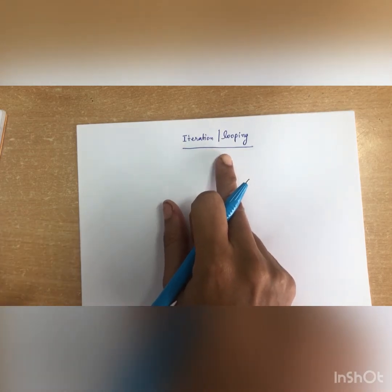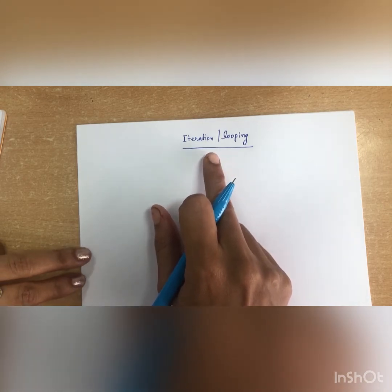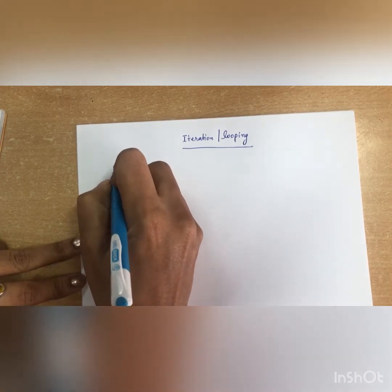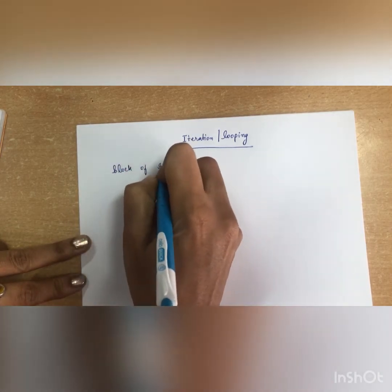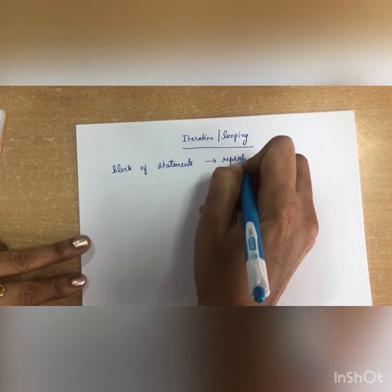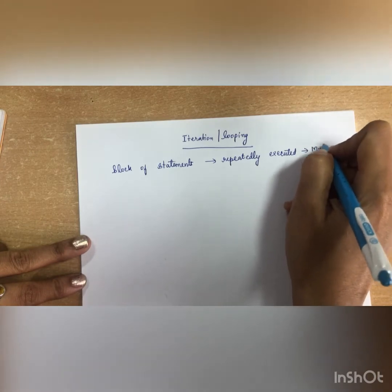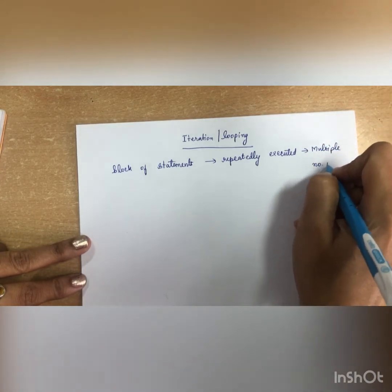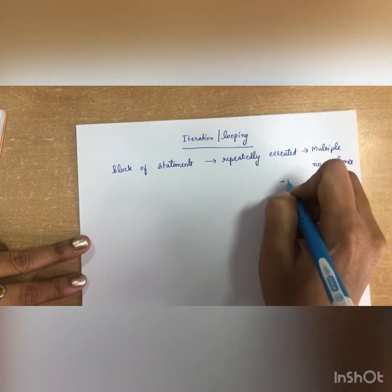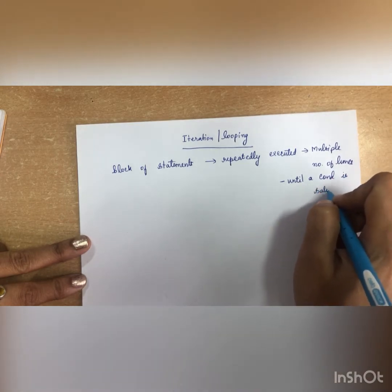What is iteration or looping? It is defined as a block of statements which are repeatedly executed for multiple number of times until a particular condition is satisfied. That is called as an iteration or looping.